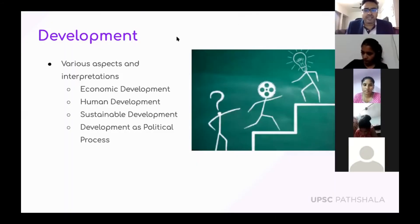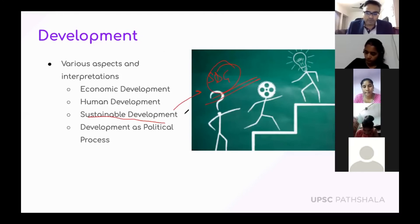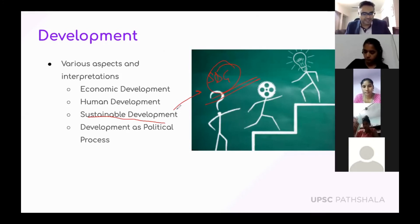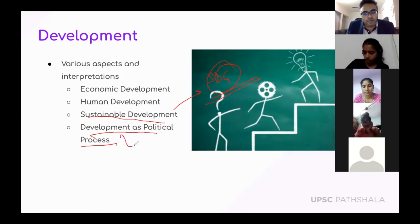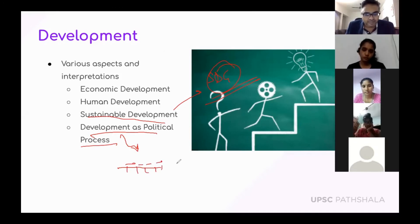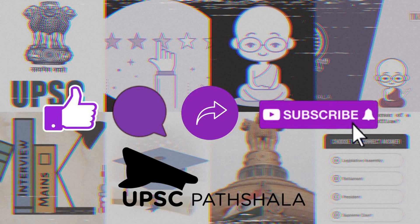Sustainable development is a very highly used and abused term — we know the SDGs, Sustainable Development Goals. The idea is that we should not just develop for this generation but for coming generations too, and should not consume so much that nothing is left for the future. Finally, development as a political process means that when we count a country's political journey — in years, governments, policies, or laws — development should also be a central key point of those political processes.